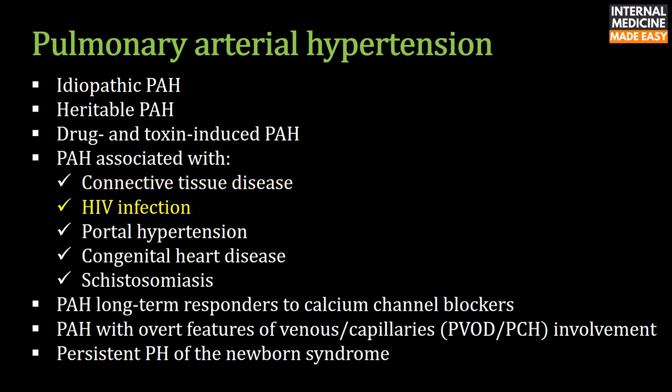There is evidence of vascular involvement in HIV infection, including arteriopathy with severe intimal and smooth muscle hyperplasia in patients with AIDS. Portal hypertension is thought to predispose patients to disturbances in the homeostatic regulation of numerous neurohormonal and vasoactive mediators that induce the development of pulmonary arterial hypertension.